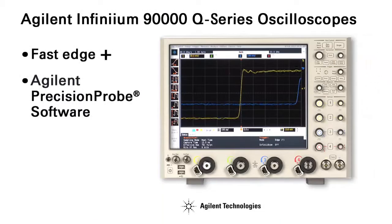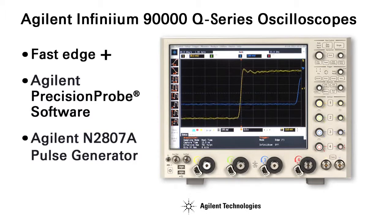Agilent's precision probe software is the fastest and easiest way to remove insertion loss due to probes, cables, switches, or any other unwanted circuit element in your measurement system. The combination of the Q-Series oscilloscope and the 7 picosecond edges produced by the new ultra-fast pulse generator allow insertion loss characterization and removal up to 63 GHz.